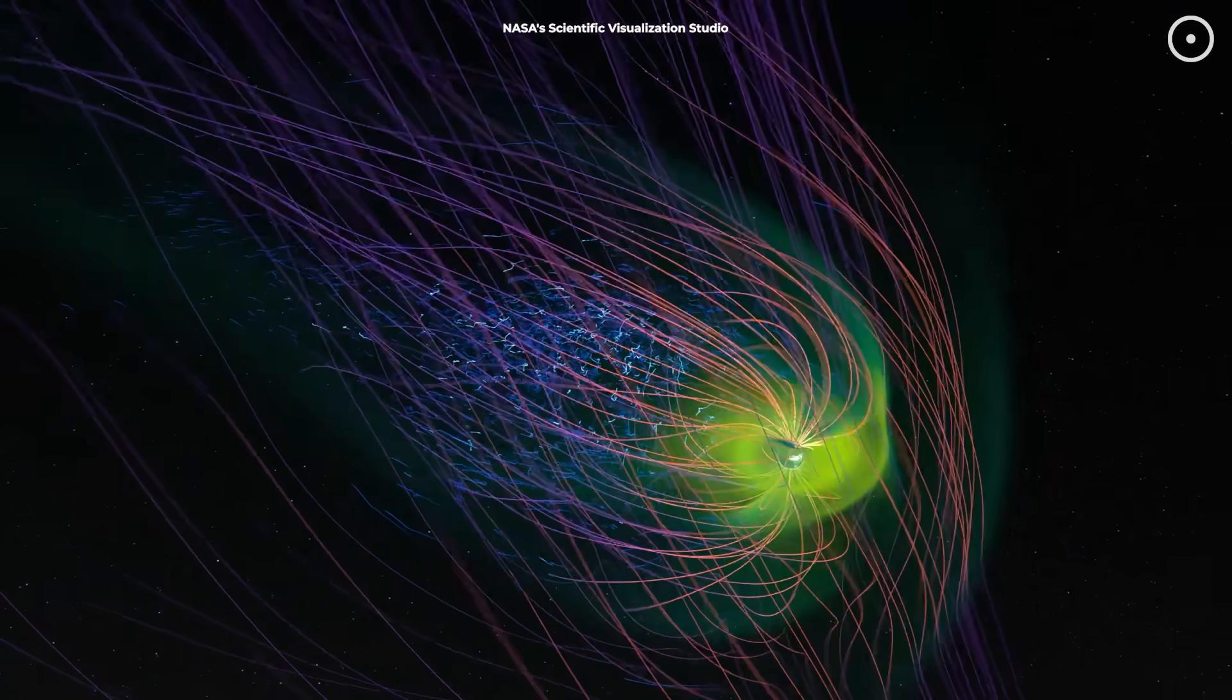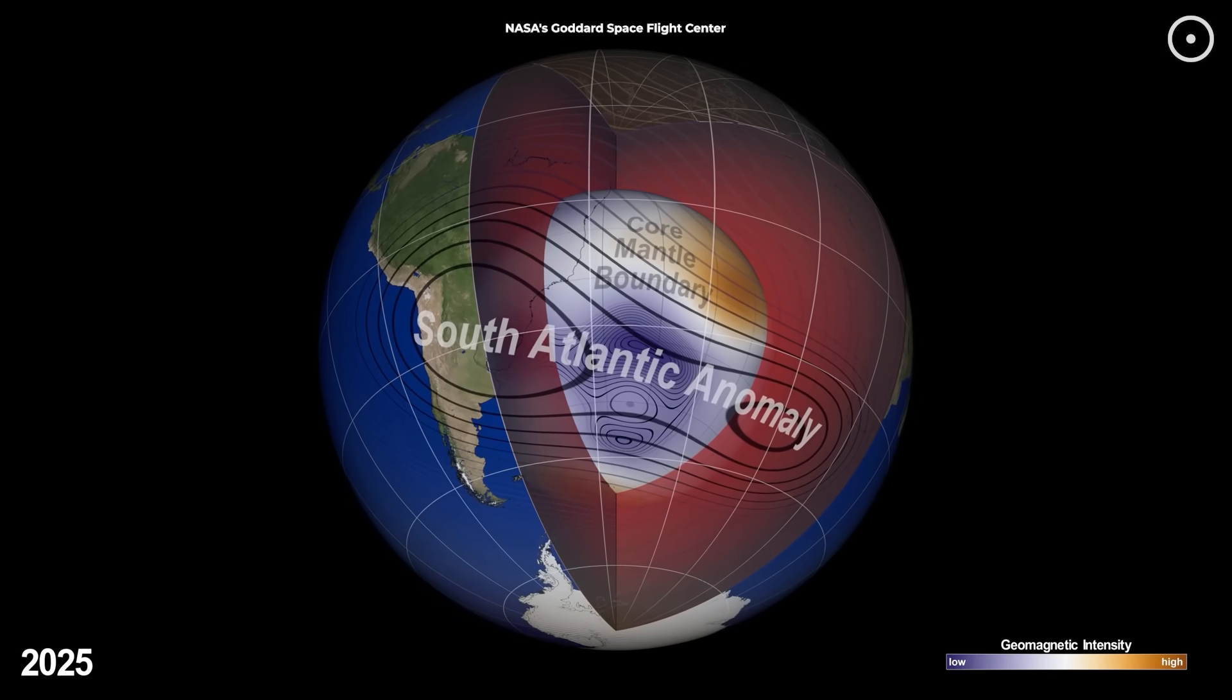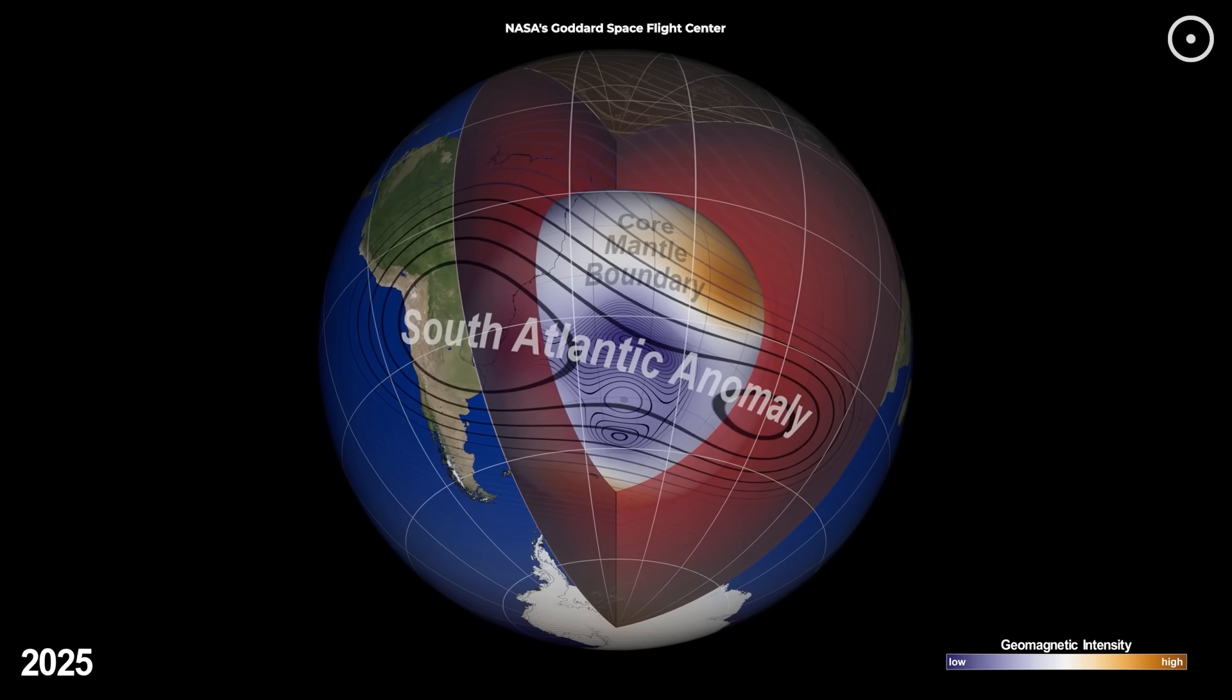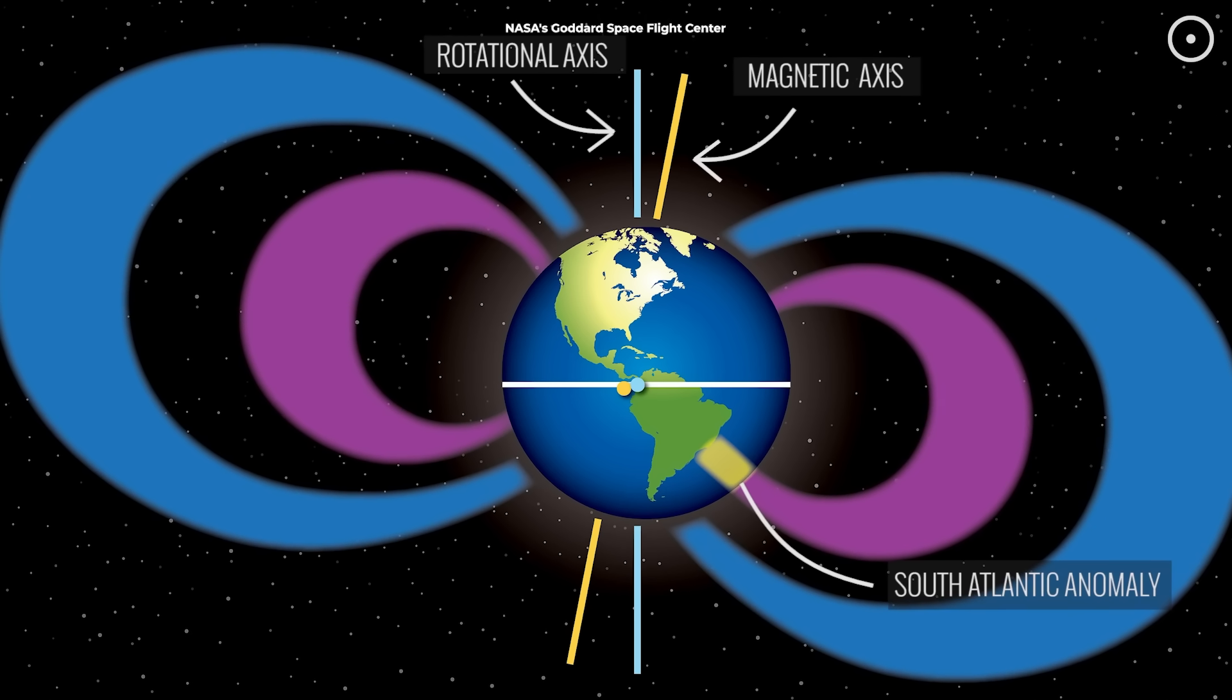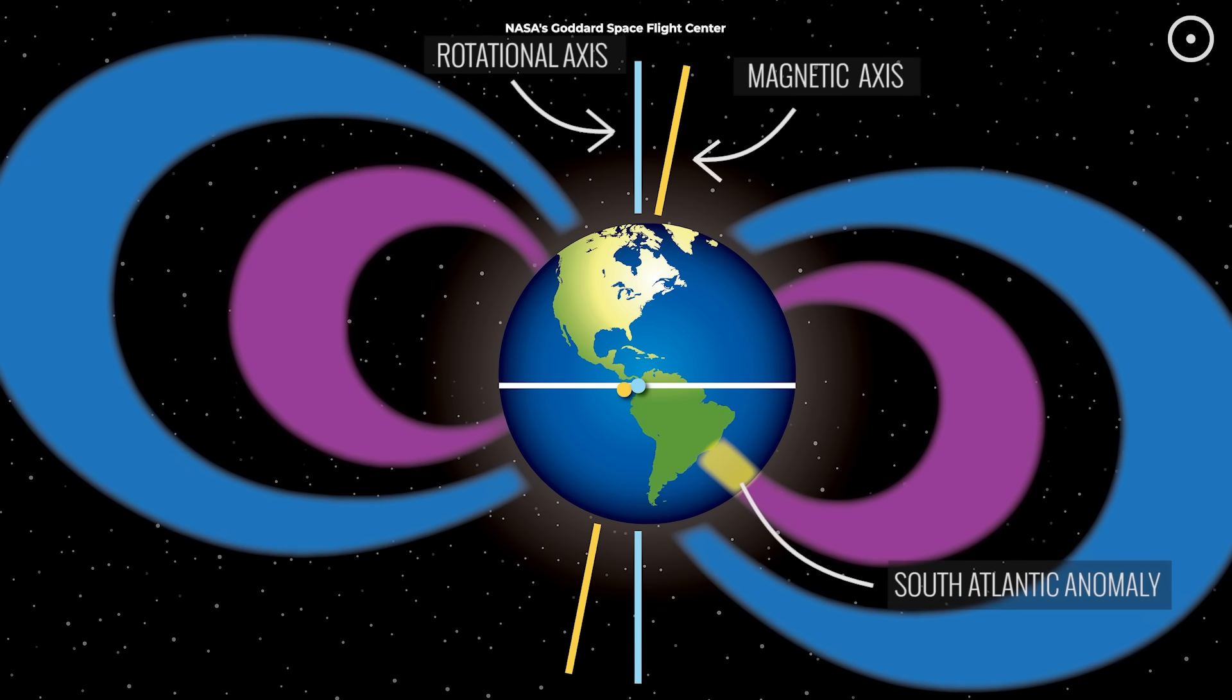Remember when I said our magnetic shield is weakening? Well, scientists have discovered a massive weak spot over the South Atlantic Ocean, stretching from South America to Africa. They call it the South Atlantic Anomaly, and it's like a dent in our magnetic armor, where the field is significantly weaker than normal.